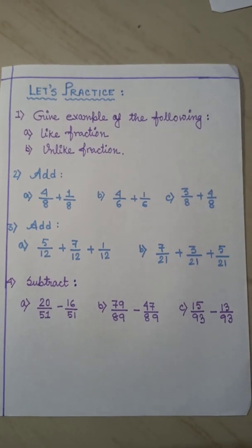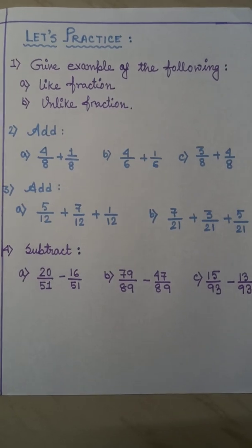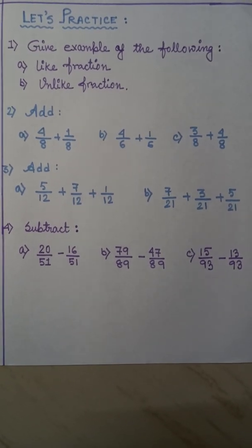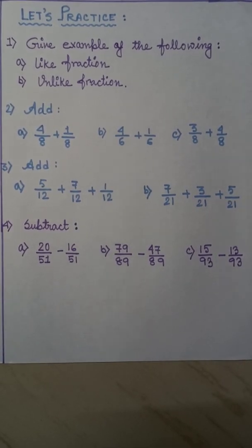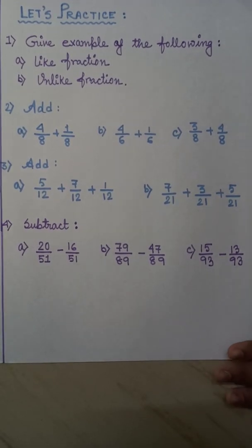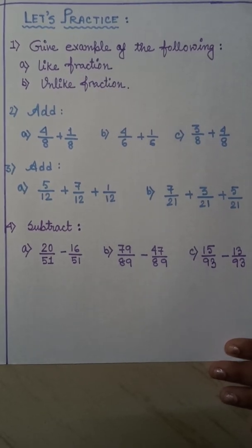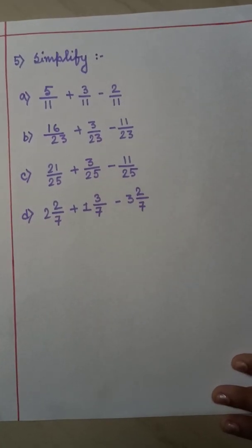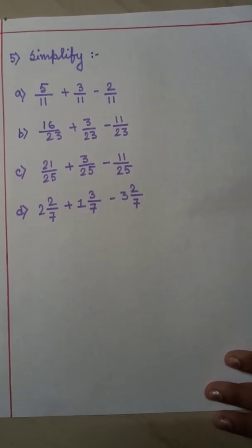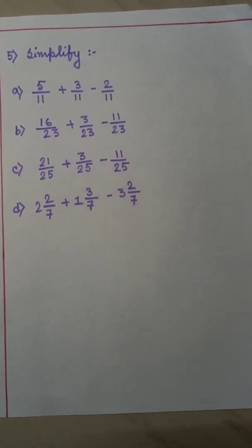Next comes the 'let's practice' portion. You have to write the questions in your maths copy and solve them on your own. You have to pause the video here and take a screenshot from your mobile, then write the questions in your maths copy and solve. There are 5 questions in total — questions 1, 2, 3, 4, and question 5 is on the next page. Again pause the video and take a screenshot for question 5, which is simplification.